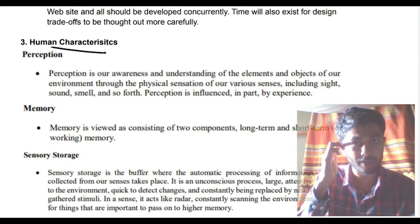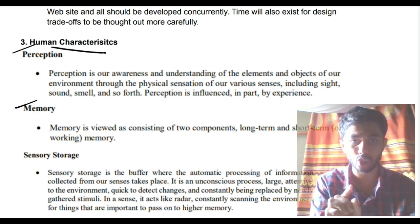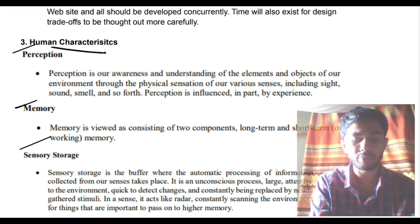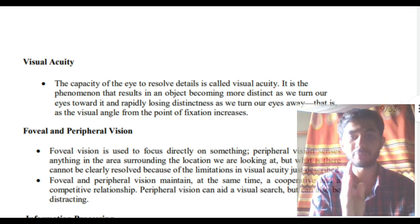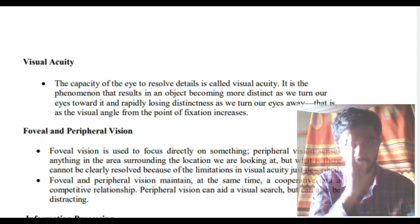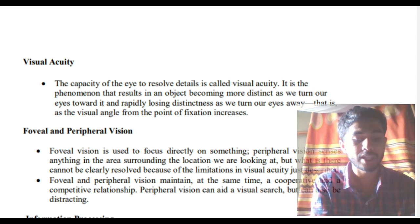For human characteristics, start from perception — that's the first thing — then move on to memory. There are two types of memory: short-term and long-term memory. Then you have sensory storage for the eyes. After that we have visual acuity and foveal and peripheral vision. Foveal means straight-ahead vision. Peripheral vision means when you are looking straight ahead, you can also see roughly 180 degrees to your right and left — that is peripheral vision.